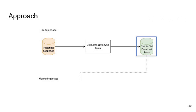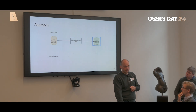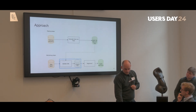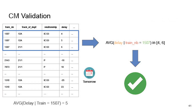Now that we have our stable data unit tests, we move on to the monitoring phase. In this phase, we validate those conditional metrics on tomorrow's new batch, which gives us a set of flagged conditional metrics — those that reported an error. Using some algorithms I'll detail shortly, we then want to find the tuples with errors.